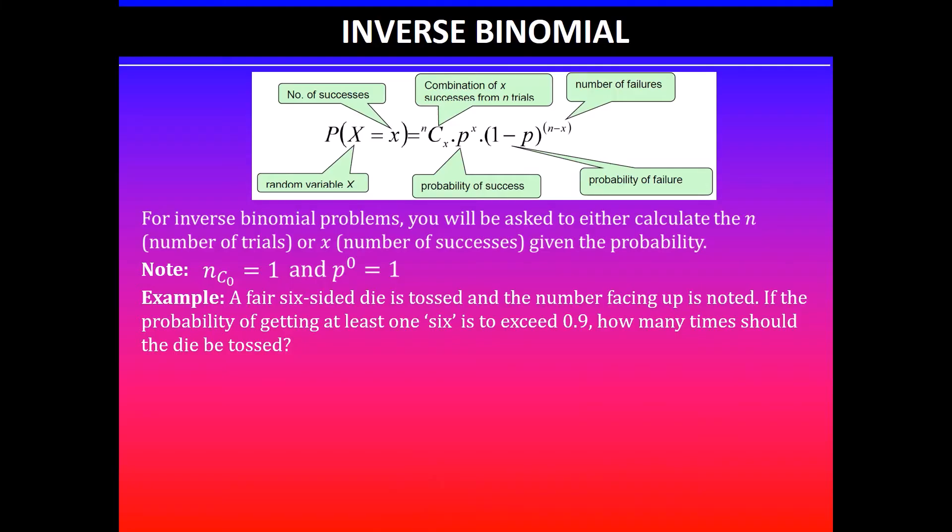So in this question it says a six-sided die is tossed and the number facing up is noted. If the probability of getting at least 1 six is to exceed 0.9, how many times should the die be tossed?